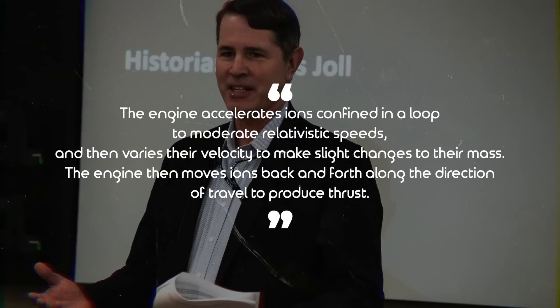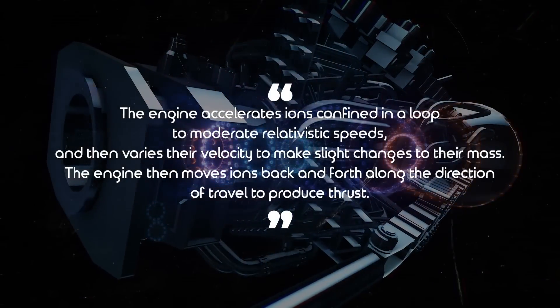The engine accelerates ions confined in a loop to moderate relativistic speeds, and then varies their velocity to make slight changes to their mass. The engine then moves ions back and forth along the direction of travel to produce thrust. He wrote in his abstract, the engine has no moving parts other than ions traveling in a vacuum line, trapped inside electric and magnetic fields.